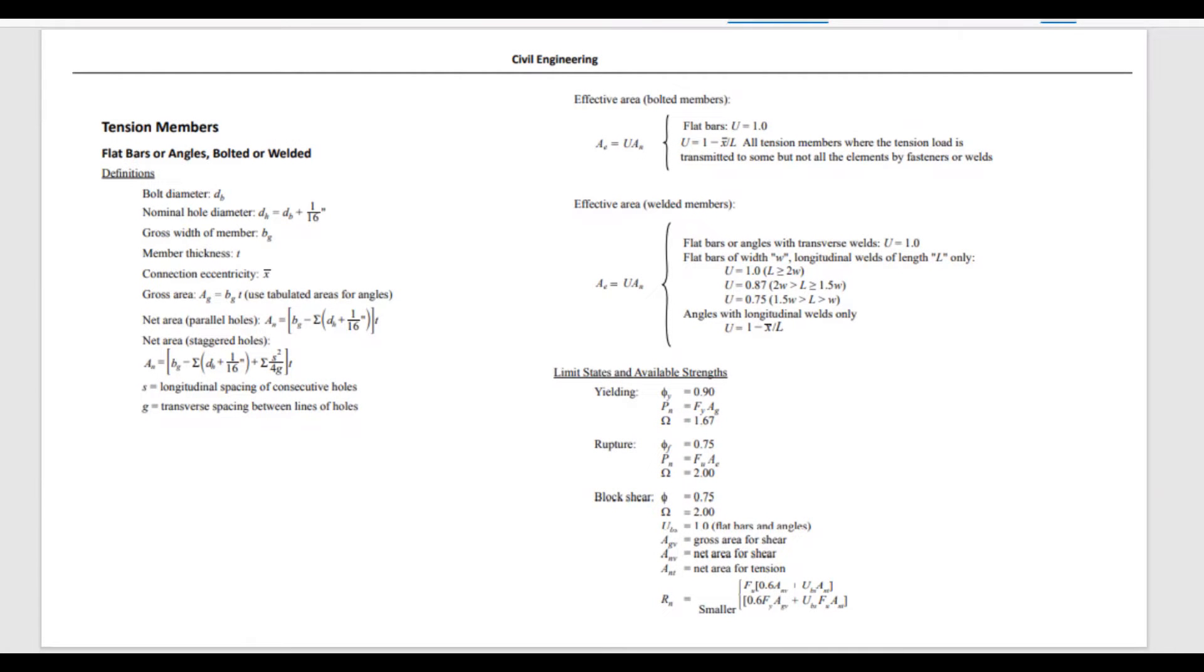As always, I would like to first look in the FE handbook on what you are given on tension members. You can find tension members under the civil engineering chapter. And here you'll find the three main failure modes, which are yielding, rupture, and block shear. Last week, we discussed yielding. And today we're going to discuss rupture.